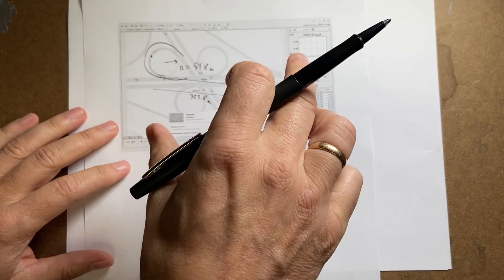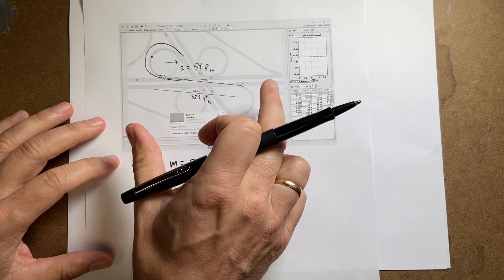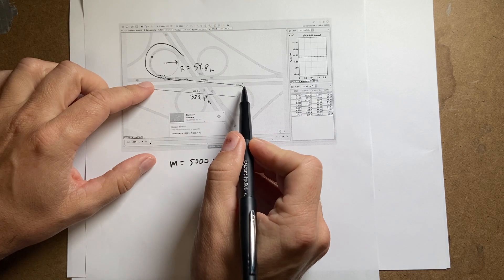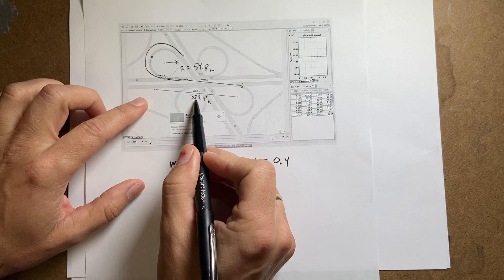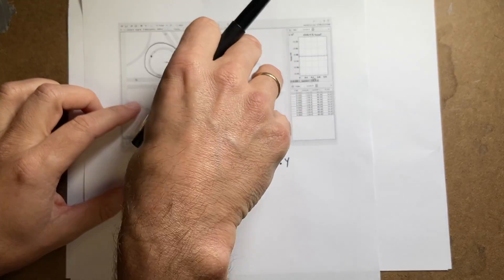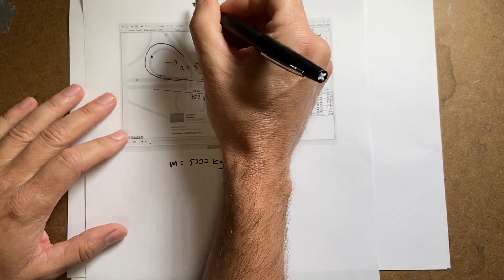And so what I did was I took a screenshot from Google Maps. And Google Maps has a measure tool, so I actually measured from this point to that point in Google Maps. And that's 322.8 meters. And then I put the picture into tracker video analysis.